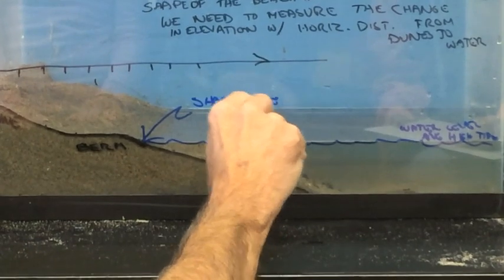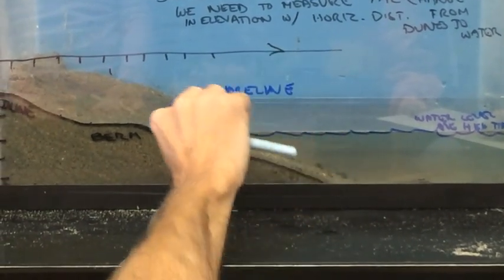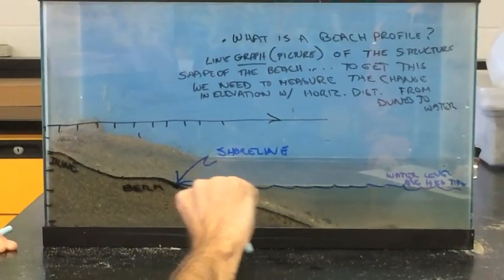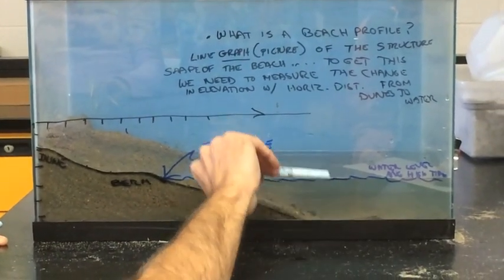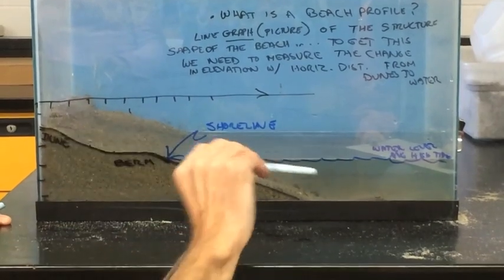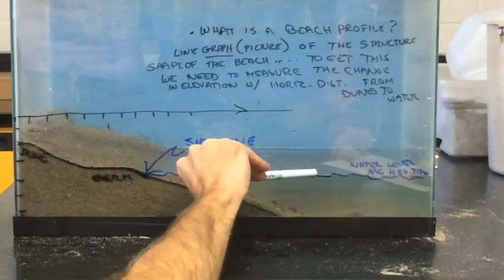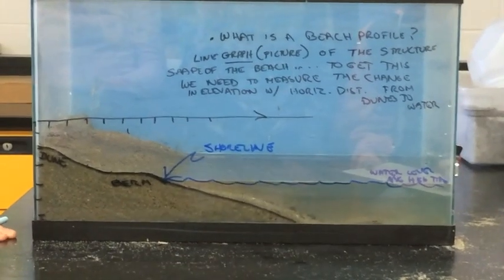Will the shoreline constantly be changing throughout the day? Yes. If the tide goes down, the shoreline goes further out. If the tide goes up, the shoreline goes further in. But if we're comparing from month to month, year to year, we just need a reference line to refer to.